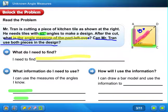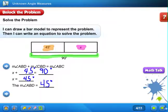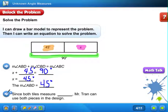Can Mr. Tran use both pieces in his design? Can he use both pieces? Well, he needs tiles with 45 degree angles. Does this have a 45 degree angle? Absolutely. So, the answer is yes, he can. Since both tiles measure 45 degrees, Mr. Tran can use both pieces of tile.